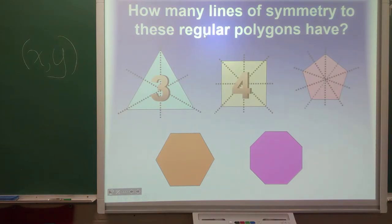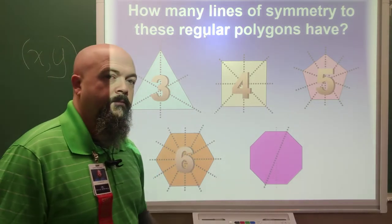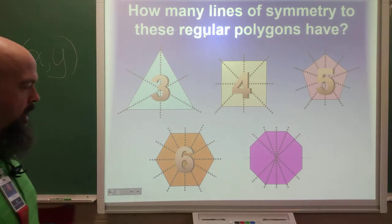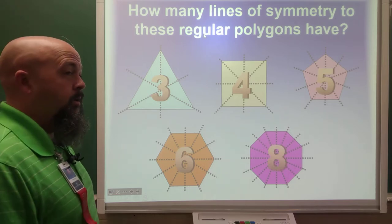We have a pentagon. Pentagon's got five. A hexagon. Hexagon has six. And then, let's look at the stop sign octagon. Your octagon's going to have... That's a lot of lines. What is that? That is eight.